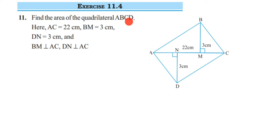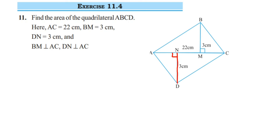Here AC is 22 cm, BM is 3 cm, DN is 3 cm. They have also given that BM is perpendicular to AC and DN is perpendicular to AC. Perpendicular means they are making a 90 degree angle. Like you can see here, this DN is making 90 degree — they have given a square symbol, which indicates 90 degrees.